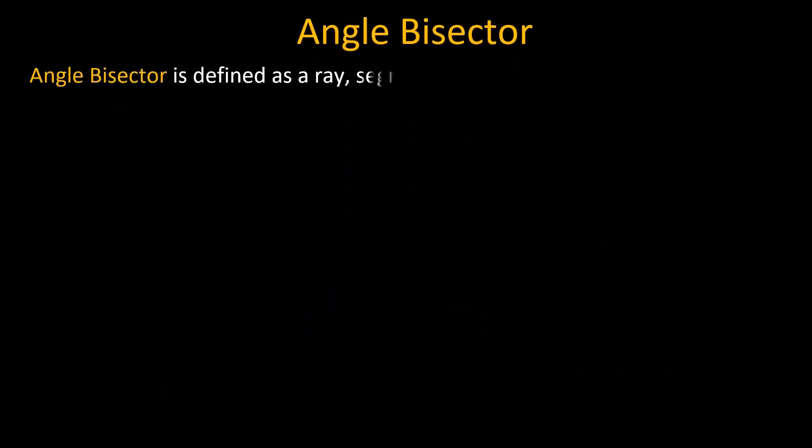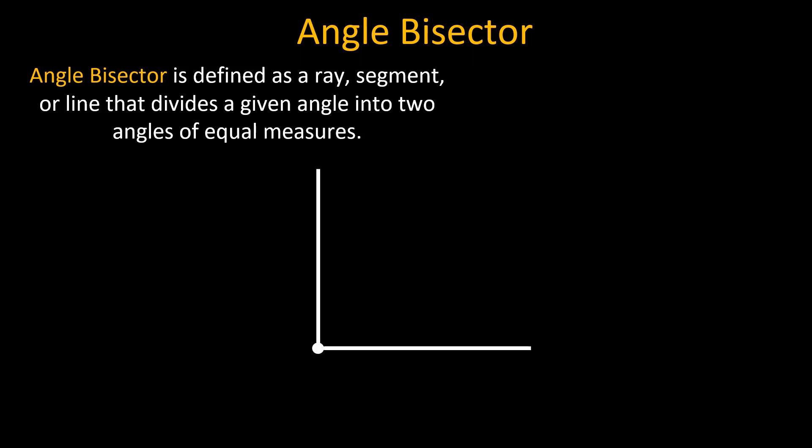An angle bisector is defined as a ray, segment, or line that divides a given angle into two angles of equal measures. For example, an angle bisector of a 90 degree angle will divide it into two angles of 45 degrees each.